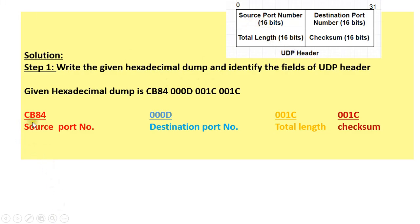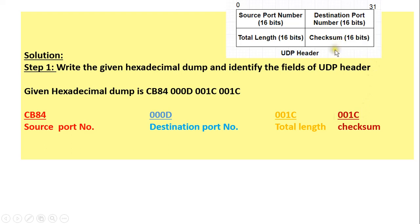The first chunk of 4 hexadecimal digits is CB84, which corresponds to the 16-bit source port number. The second chunk is 000D, which corresponds to the destination port number. The third chunk is 001C, which corresponds to the total length field — inclusive of the header length and the data length. And the fourth chunk is 001C, which corresponds to the checksum field of the UDP header.